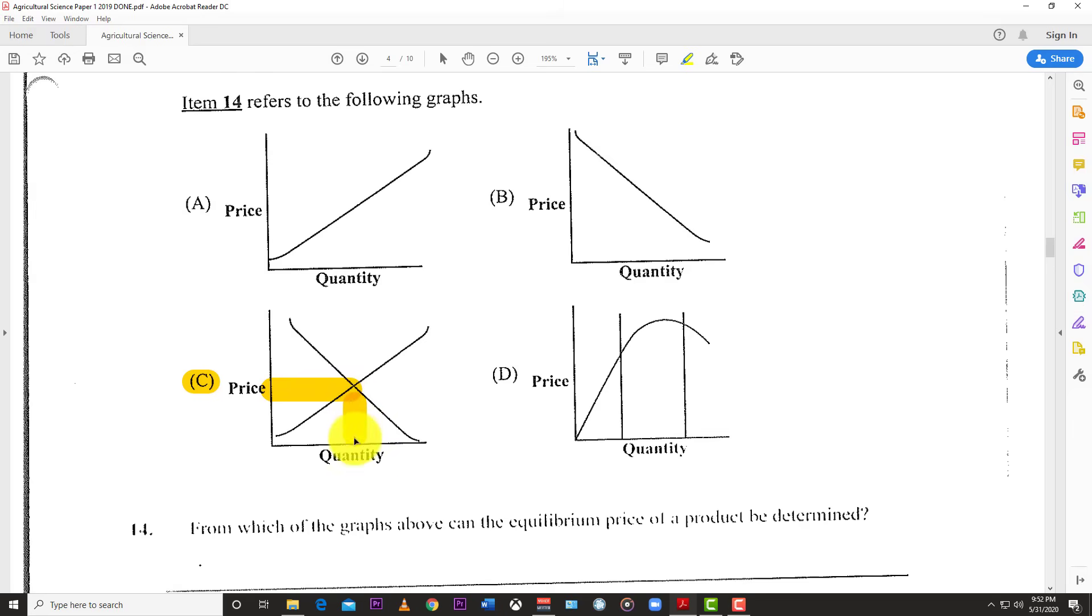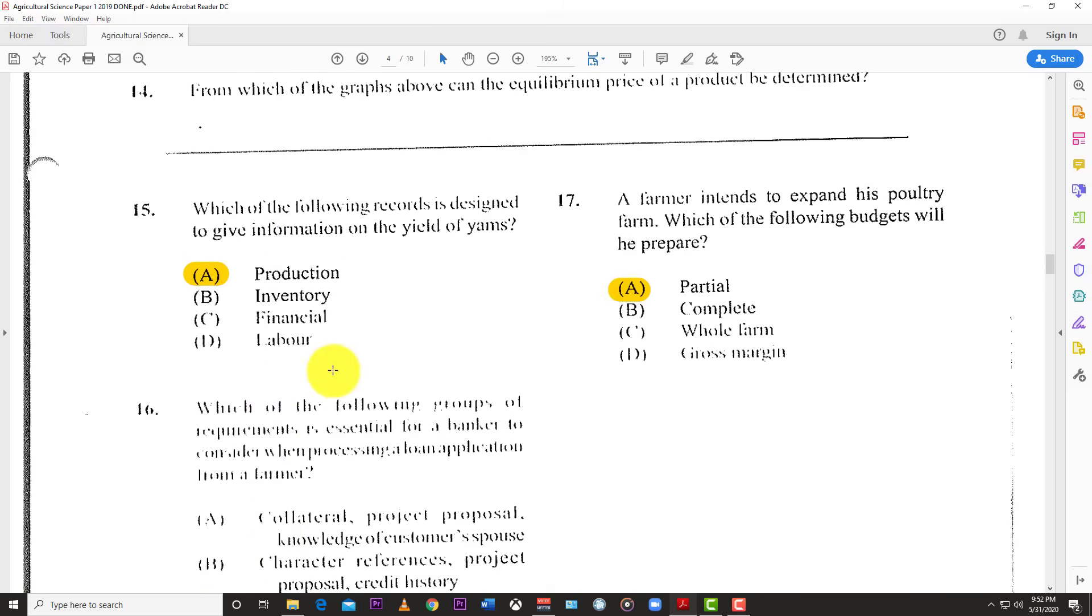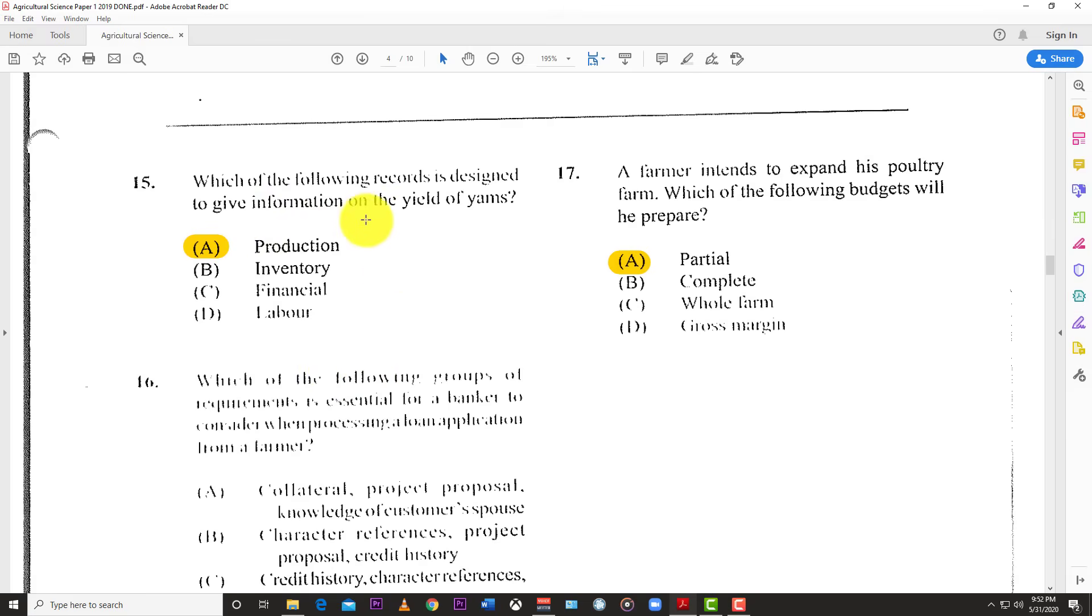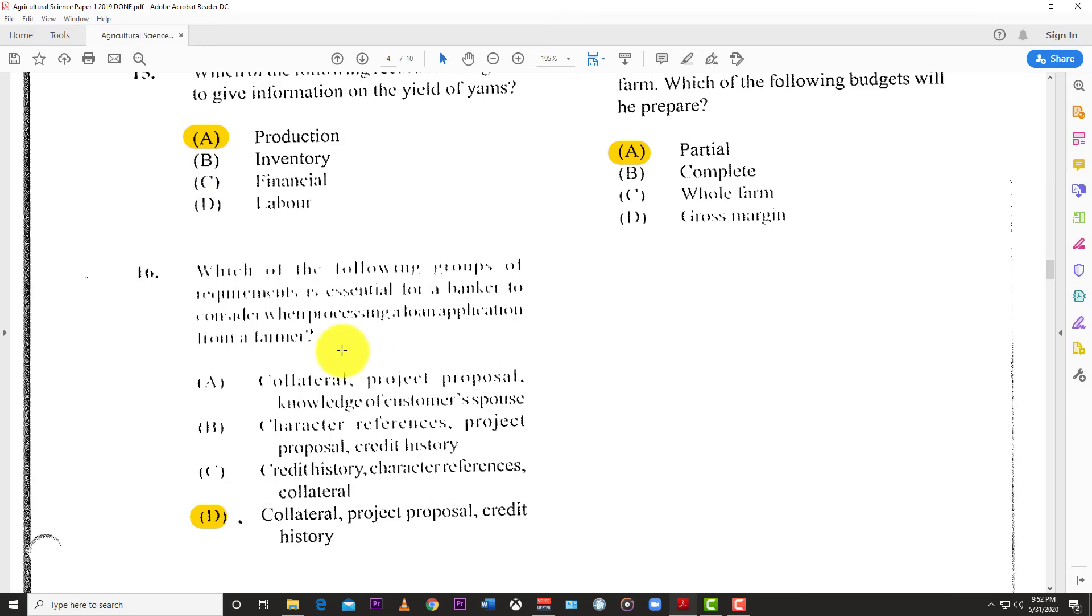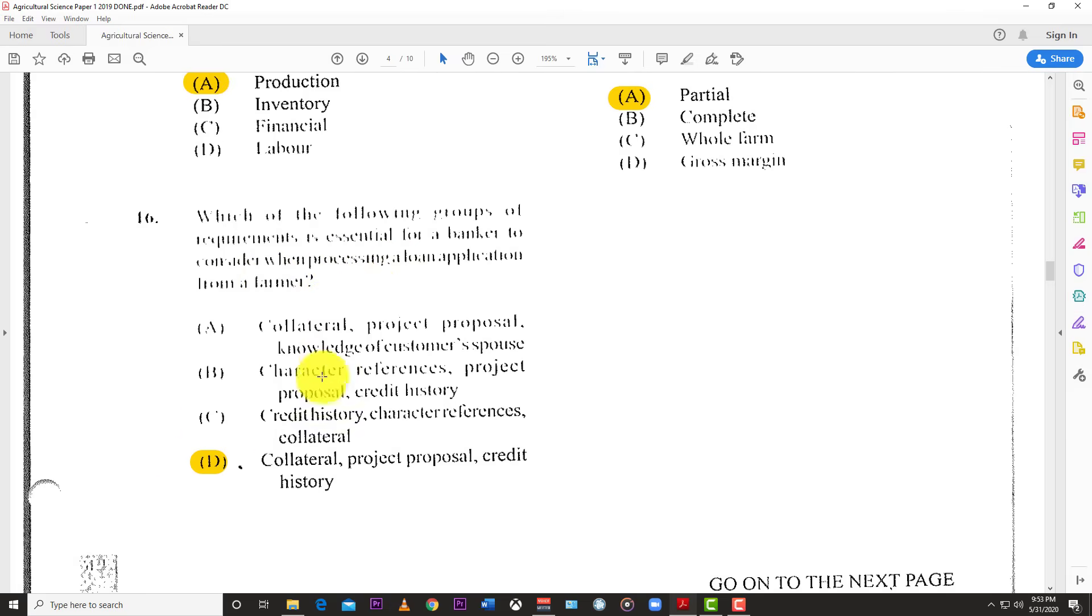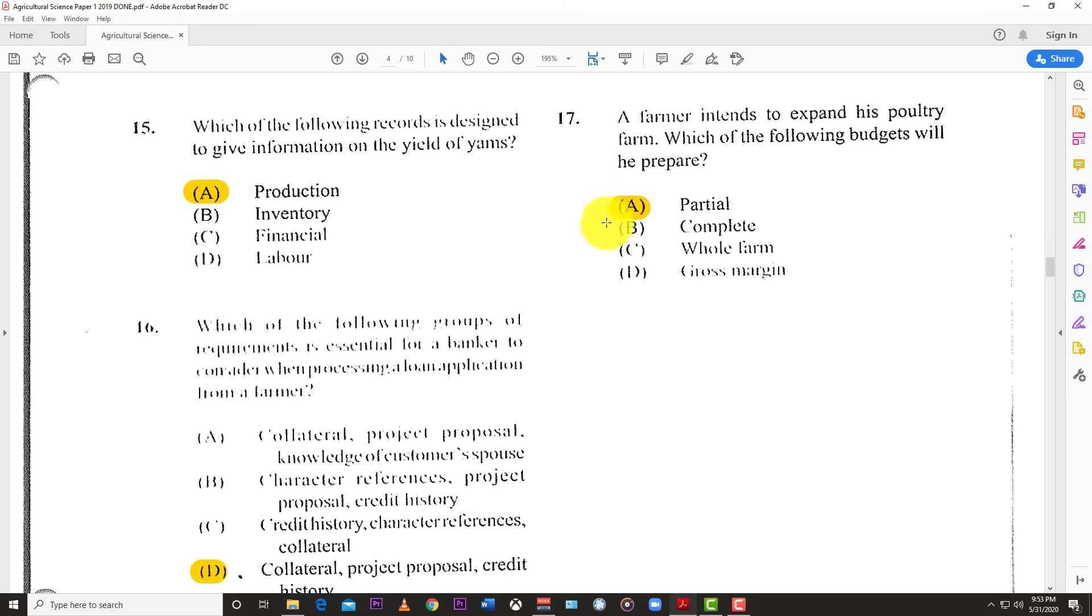Number 15: Which record is designed to give information on the yield of yams? Production records. Number 16: Which group of requirements is essential for a banker to consider when processing a loan application from a farmer? The answer is collateral, project proposal, and credit history. The bank needs to know what assets back up the loan, how much you want, and if you can pay it back. Number 17: A farmer intends to expand his poultry farm. Which budget will he prepare? A partial budget, because it's just about expansion, not the entire farm.